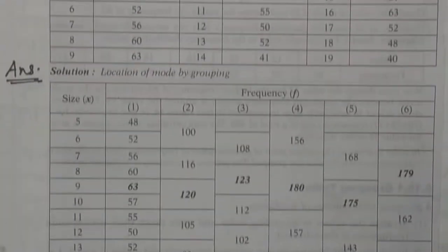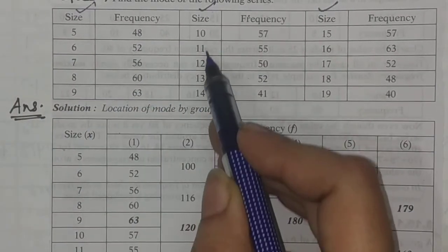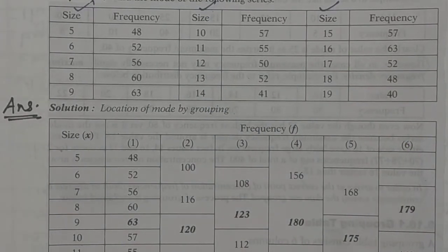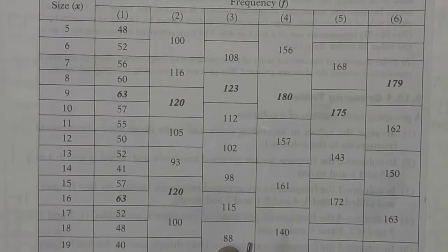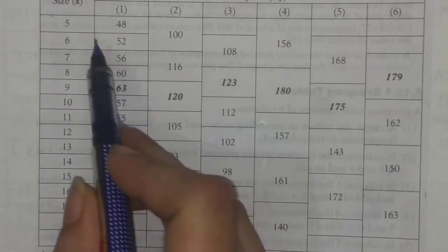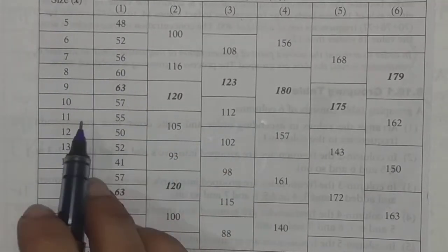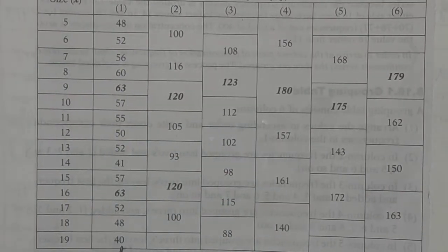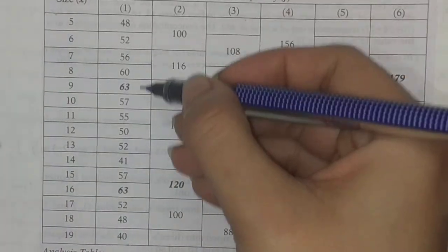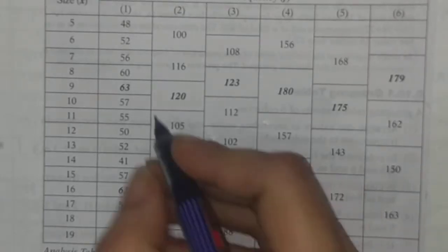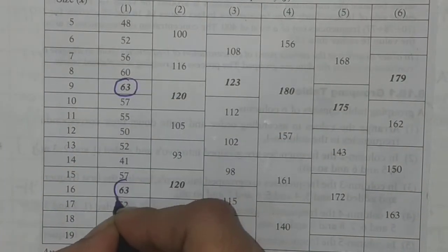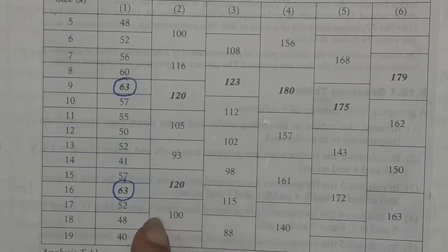This is your size column, the first column which you arrange in ascending order: 5, 6, 7, 8, 9, 10, 11, 12, 13, 14, 15, 16, 17, 18, 19. Now let's write the matching frequencies from the question. Looking at the data, the biggest number is 63, which appears twice. This is the highest value in the frequency column.